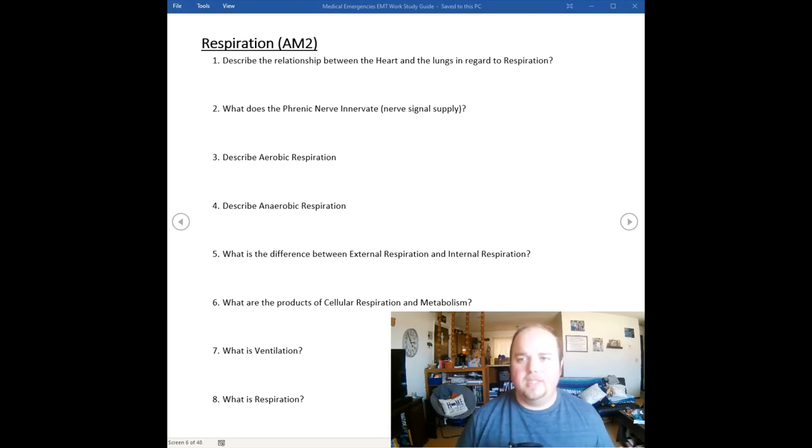These all culminate to create products in cellular respiration and metabolism. Cellular respiration and metabolism is the use of oxygen and carbohydrates - remember carbohydrates, sugars - we use those to produce energy and create carbon dioxide and water as byproducts of this metabolism.